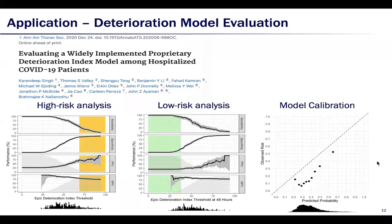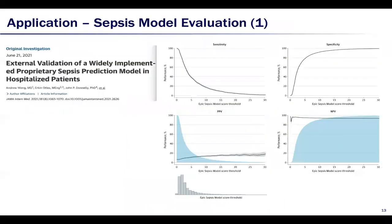The calibration plot shows the model overall overpredicts the risks. In another paper, we used the standard threshold performance plot to evaluate a widely implemented proprietary sepsis prediction model in hospitalized patients.